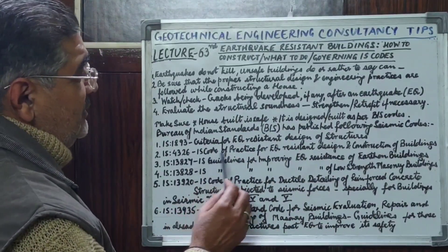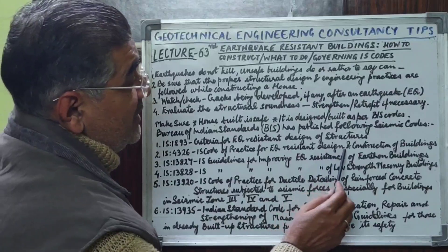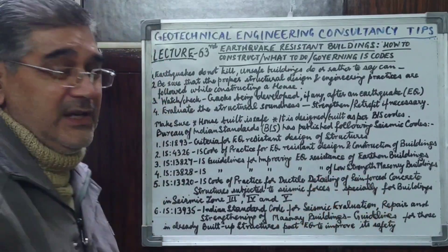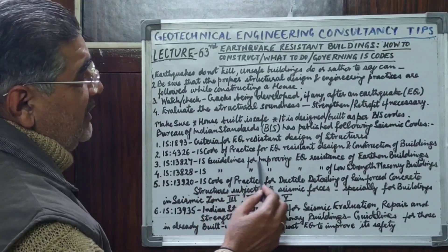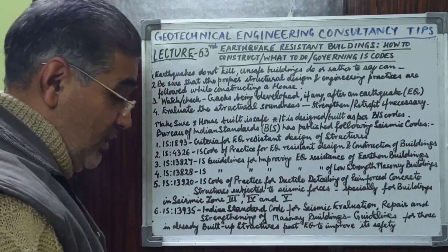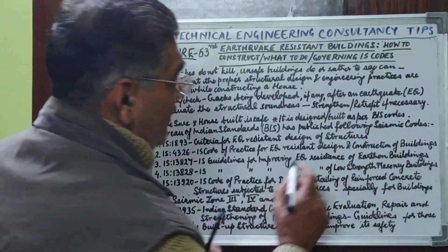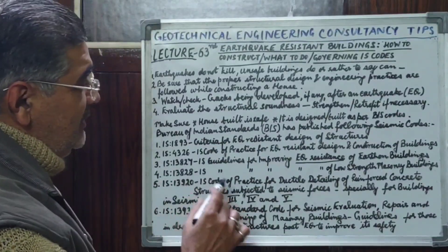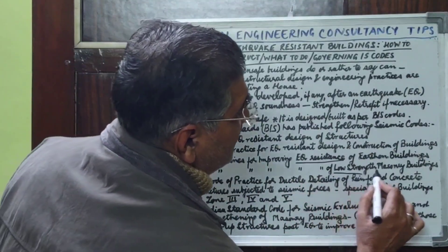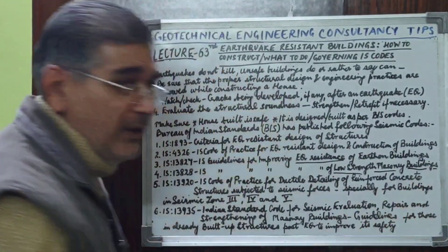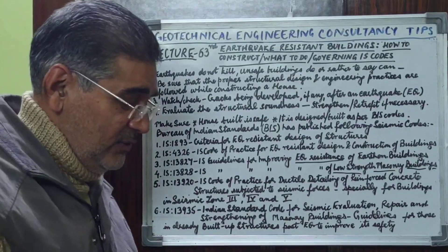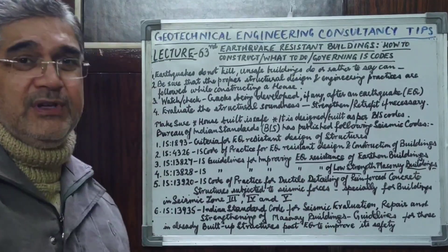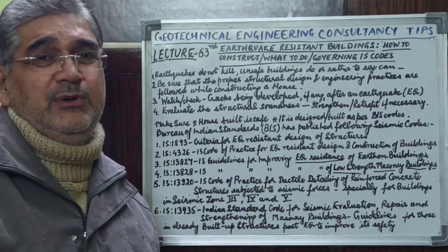IS 4326 is the Indian Standard code of practice for earthquake-resistant design and construction of buildings. IS 13827 provides Indian Standard guidelines for improving earthquake resistance of earthen buildings. IS 13828 provides guidelines for improving earthquake resistance of low-strength masonry buildings.